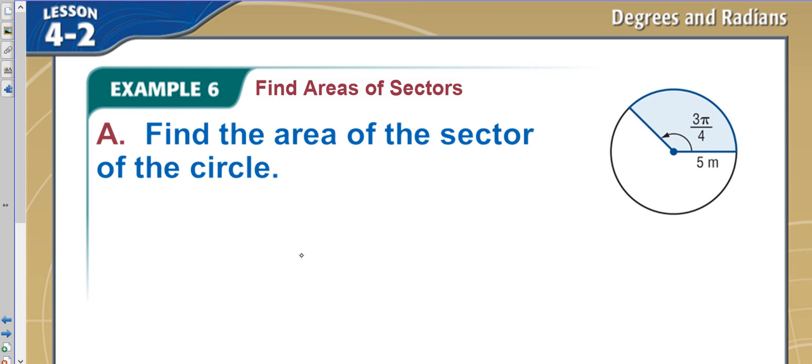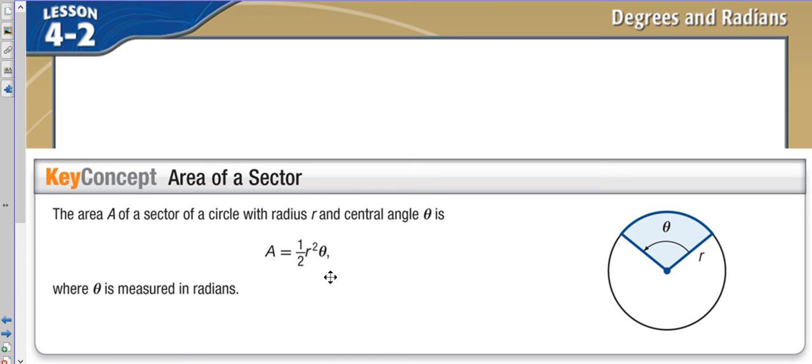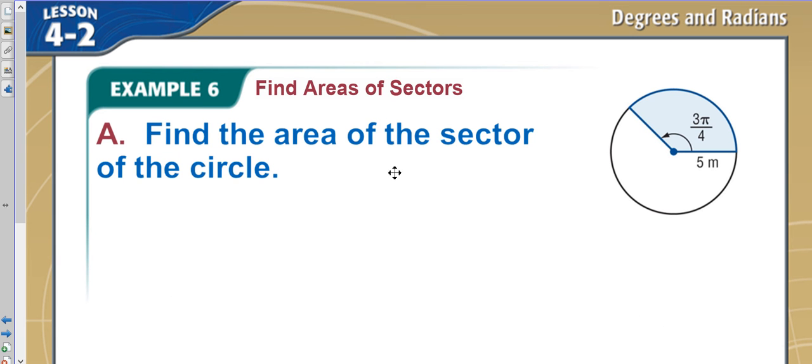So now that we have this formula here, one-half R squared theta, let's see about this area of a circle. So again, the area of a sector is one-half R squared theta. So now this right here is my theta, and I know my R. So all I have to do really here is plug in values.